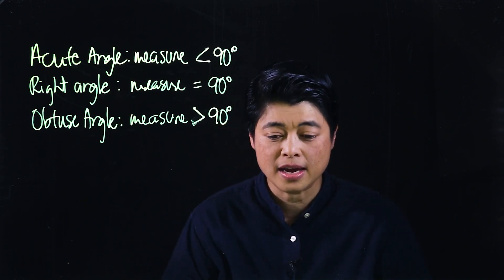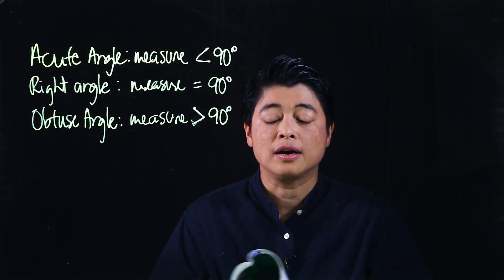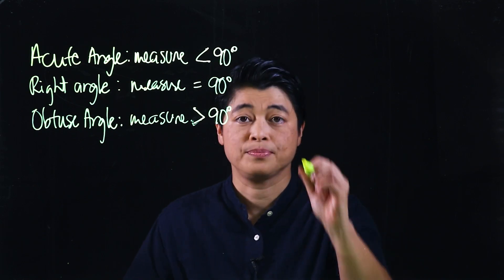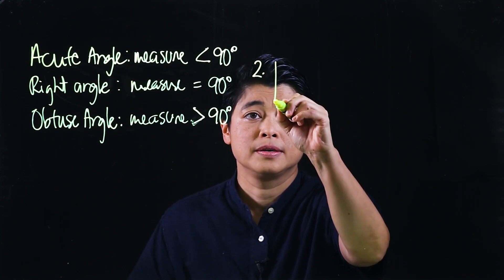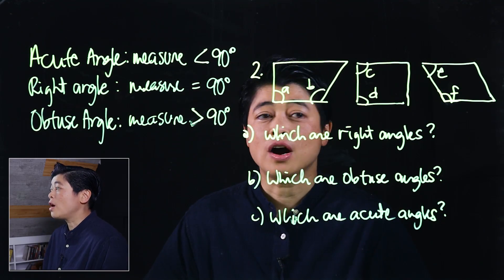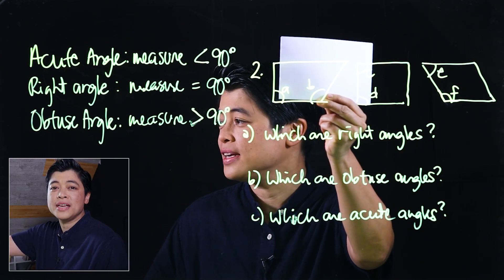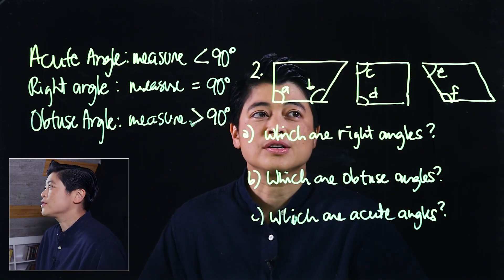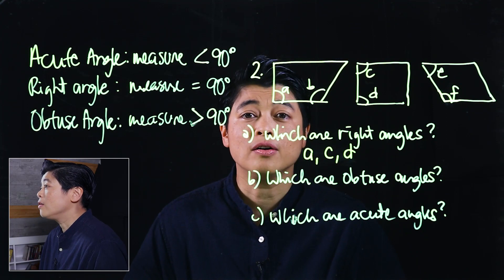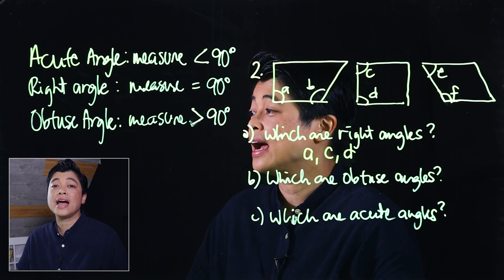I selected problem number two. It says use the right corner to determine the answers to the questions. The first question asks which are right angles. If we take our corner and put it against the drawing and they meet, that means that's a right angle. By the drawings, we know that A, C, and D are all right angles.